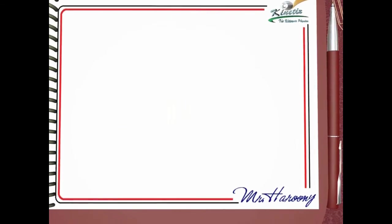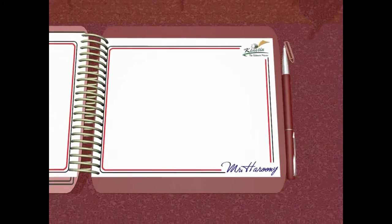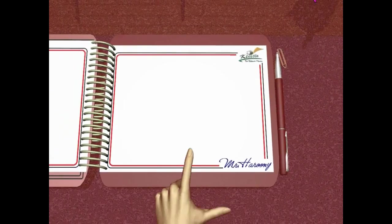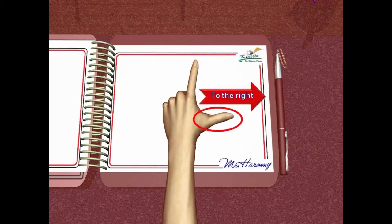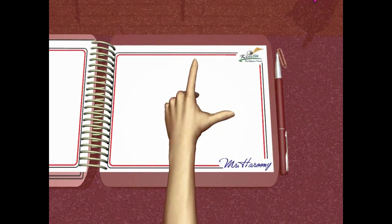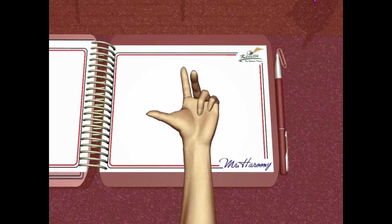Usually the question asks about the direction of the pushing force on the wire, which is given by the thumb. The directions are identified relative to the paper, not to the student. In this example the thumb is pointing to the right of the page; here the thumb is pointing to the left of the page.